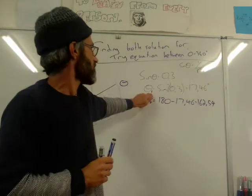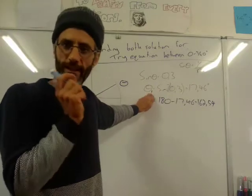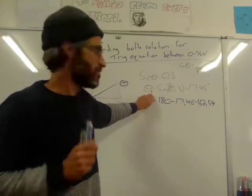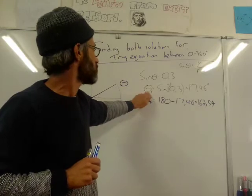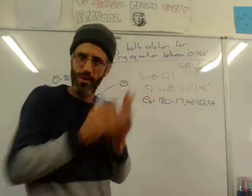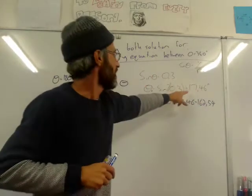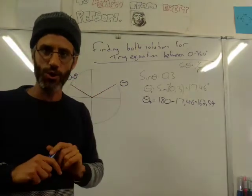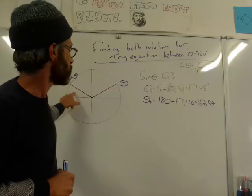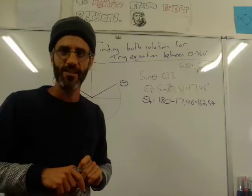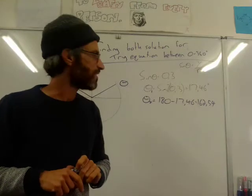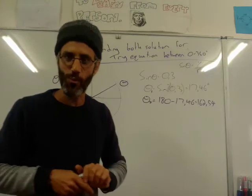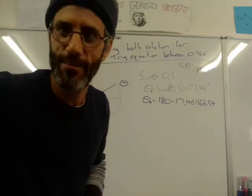So it's very simple. You find your acute angle — and this is going to be the recipe I'll do with you again and again. You find your first solution, which is always an acute angle smaller than 90. And then you use your knowledge of the quadrant to find the second solution. The second solution in this case must be 180 minus theta.